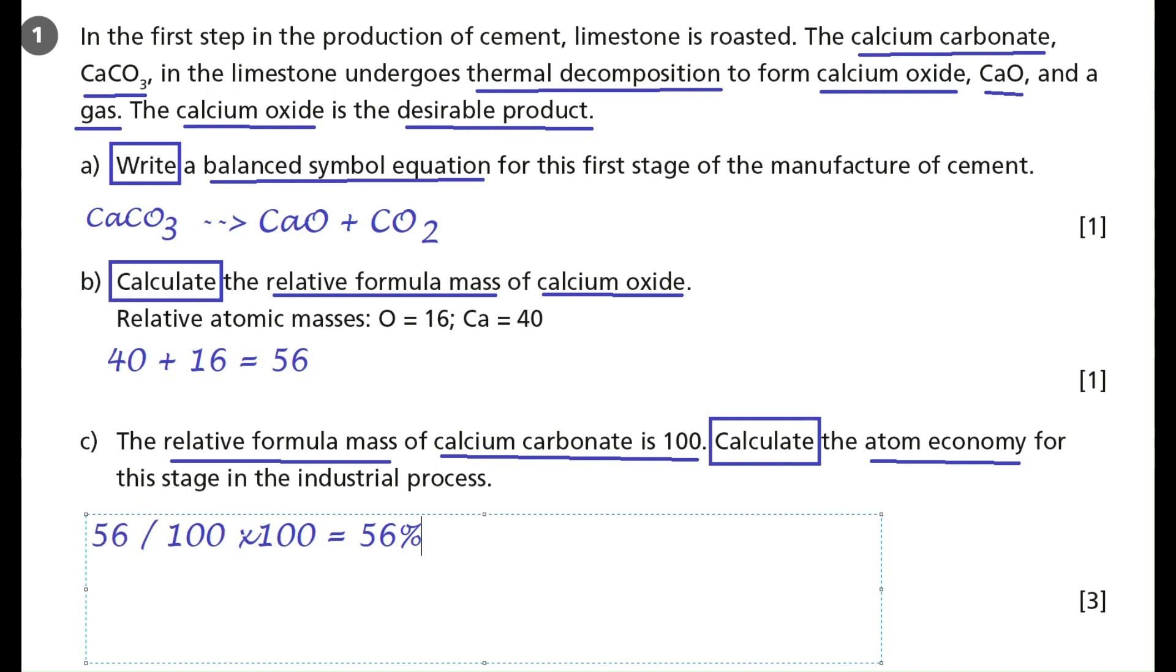There's one mark for working out how much of the mass of your desired product there is compared to your starting material. You get a mark for correctly multiplying by 100 because we want it in percent. And we also get a mark for the actual answer. Now, if you chose to write just 56%, you'd get the three marks. But if you'd accidentally typed something wrong into your calculator, but you got the working out correct, you'd still get two out of three marks. So you should always aim to put your working out in full.